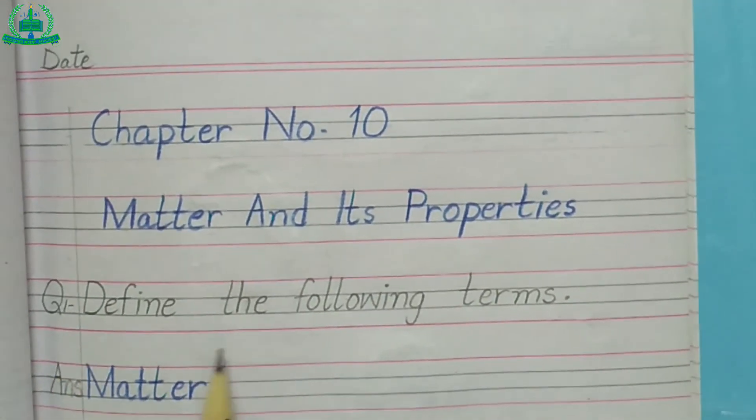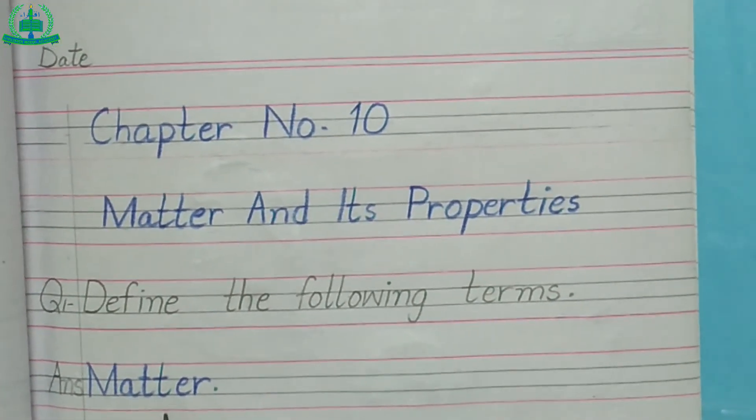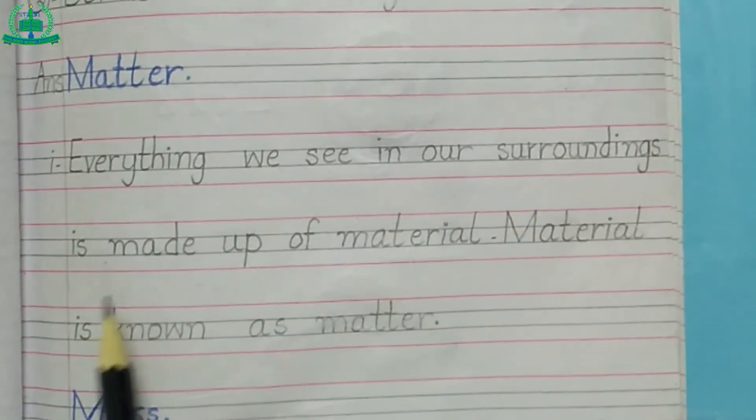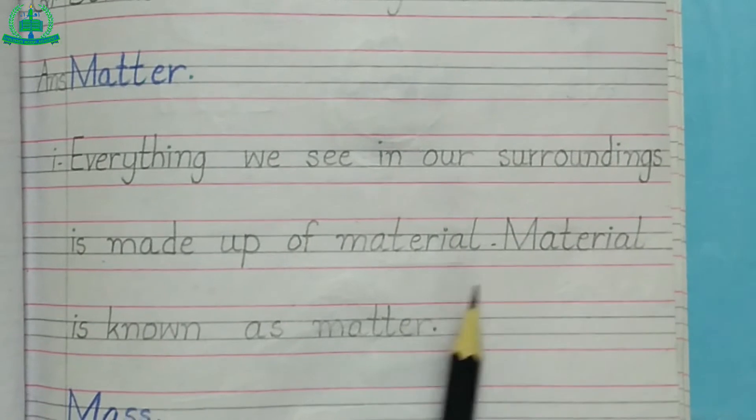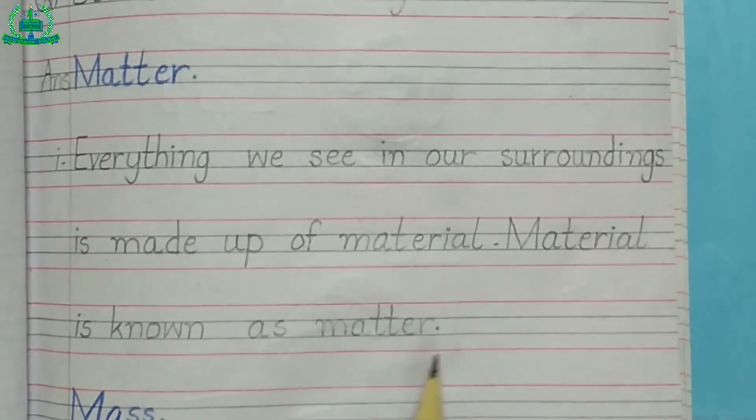Question number 1: Define the following terms. Answer. Matter: Everything we see in our surroundings is made up of material. Material is known as matter.